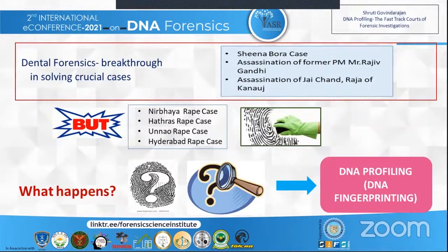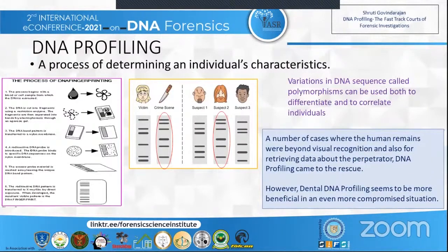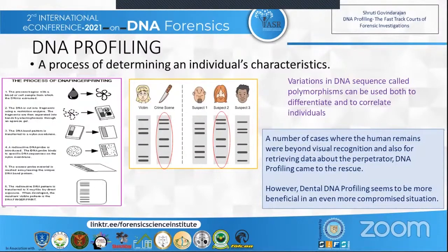What happens in such scenarios? What happens if most commonly available evidence is made extinct? This is where DNA profiling or fingerprinting comes to the rescue. DNA profiling is a process of determining an individual's characteristics. Variations in DNA sequencing called polymorphisms can be used both to differentiate and to correlate individuals. DNA fingerprinting begins with collection of samples from the site, victim, and the accused. The DNA in the cell is exposed by breaking down the cell membrane. Then the DNA fragments are broken down with the help of restriction enzymes and subjected to electrophoresis. The DNA pattern is transferred to a nylon membrane, or a radioactive probe is used which binds to specific DNA. A unique DNA pattern is obtained, which is transferred to X-ray film, and on development, the DNA fingerprint is obtained.